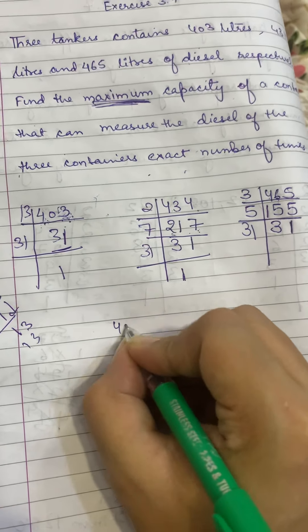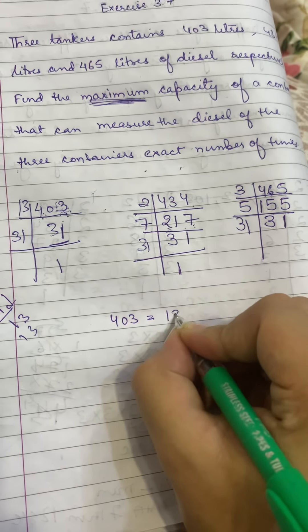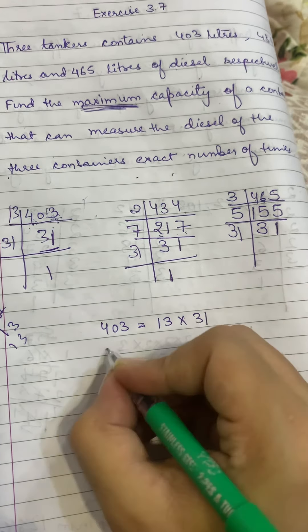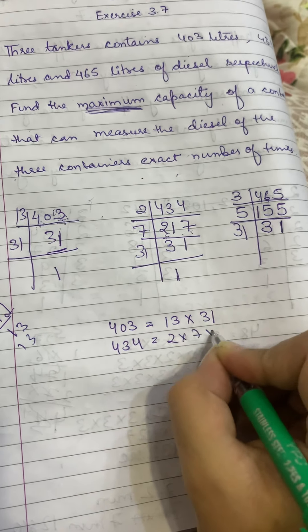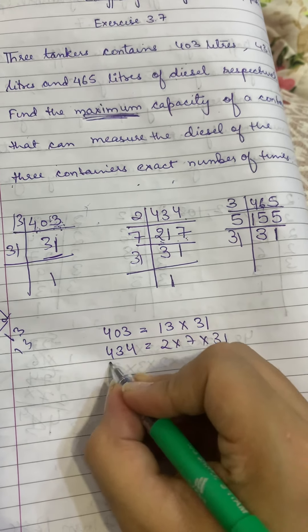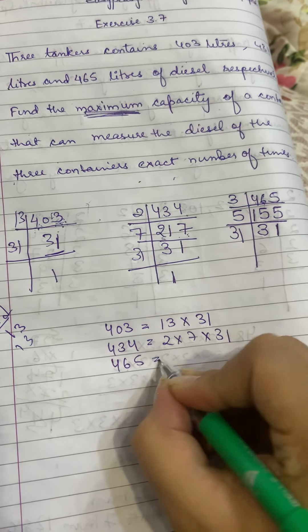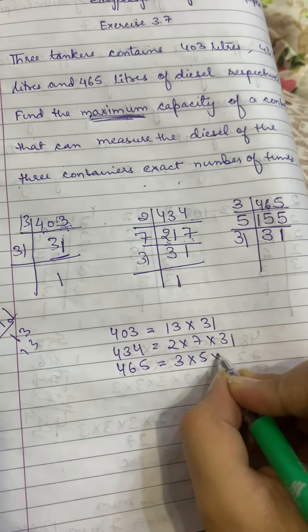So now we can write 403 is 13 into 31. We can write 434 is 2 into 7 into 31. And we can write 465 is 3 into 5 into 31.